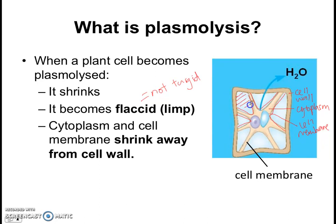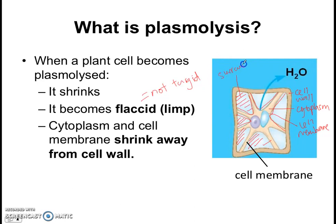In the spaces where the cytoplasm used to be, because the cell wall is fully permeable and allows all substances to pass in and out, this space will be filled by the surrounding solution. So this is a plant cell in a concentrated solution.